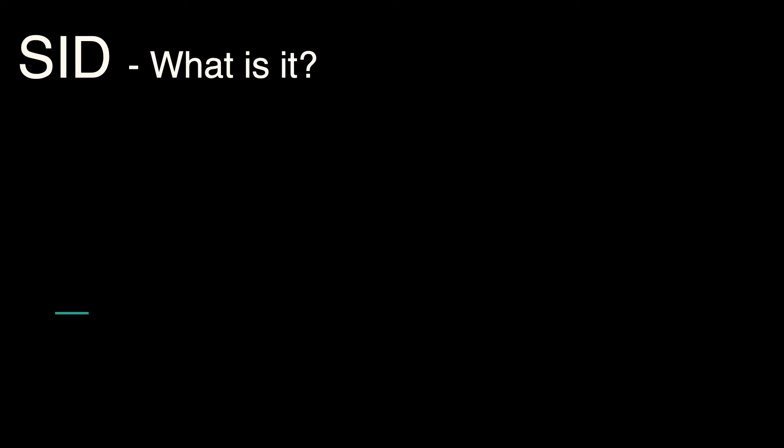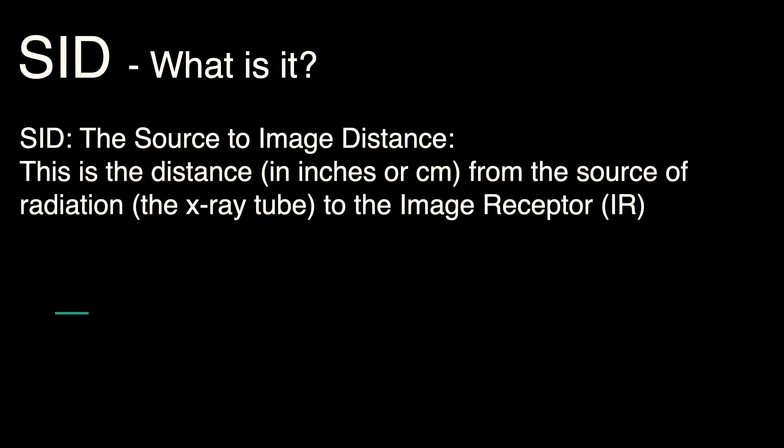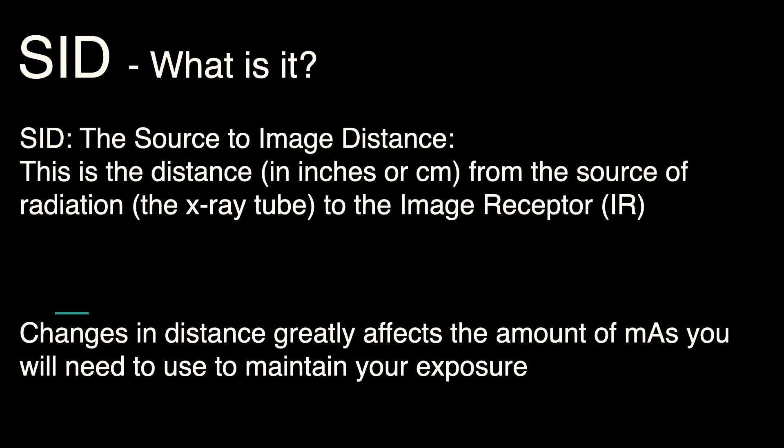And the SID, which is source to image distance, or the distance from the x-ray tube to the image receptor, or the detector. The amount of distance you have greatly affects the amount of mAs that you will need to use to maintain your exposure at those different distances.